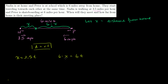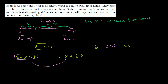We have two equations and two unknowns, so we can solve for them. We've already solved for x: x = 3.5t. Substituting into Peter's equation gives 6 minus 3.5t = 6t. Adding 3.5t to both sides gives 6 = 9.5t.